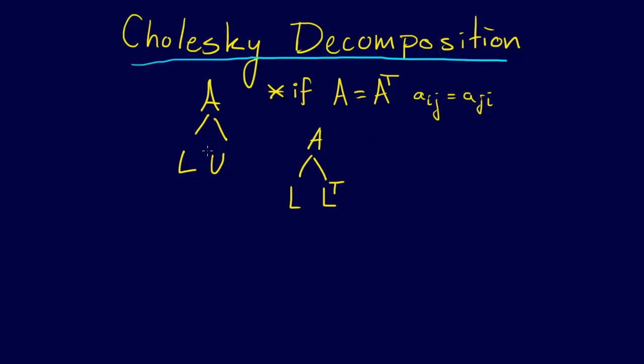Now this is really cool because it's actually a special case of this L and U, right, because L is this lower triangular matrix and U is the upper triangular matrix. Well, the transpose of L is an upper triangular matrix. And so if that U is actually equal to L transpose, then we have a Cholesky decomposition.